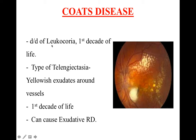Another important differential diagnosis of leukocoria is retinoblastoma. Coats' disease normally occurs around 8 to 10 years of age with male dominance, whereas retinoblastoma occurs more in the 2 to 5 year age group with no sex predilection. In retinoblastoma you can see an intraocular mass.